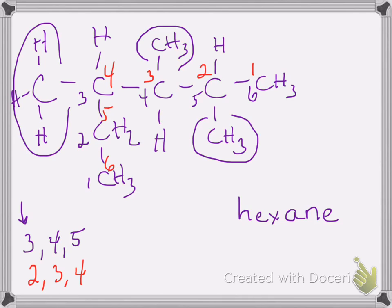Using the red numbering, I have three methyl groups falling on carbons two, three, and four. Since there are three of them, I use the prefix 'tri'. The name of this molecule is 2,3,4-trimethylhexane.